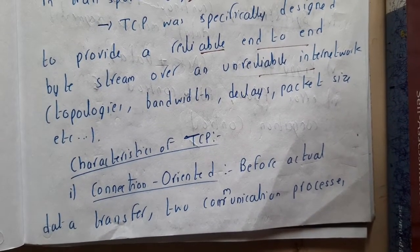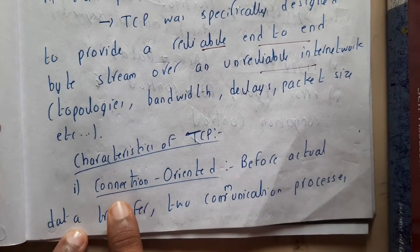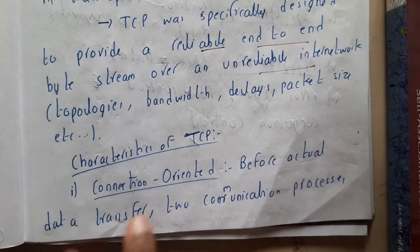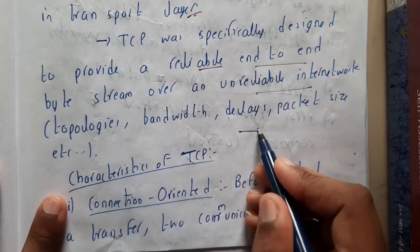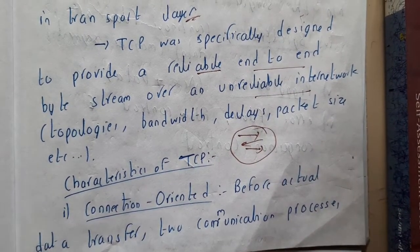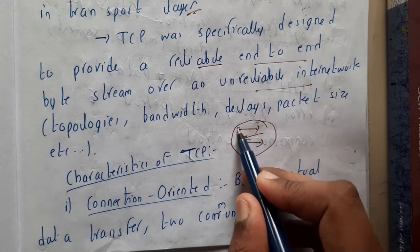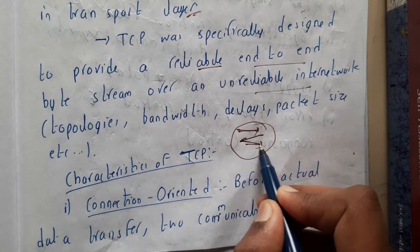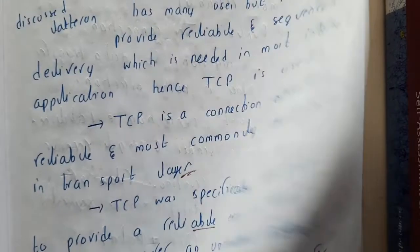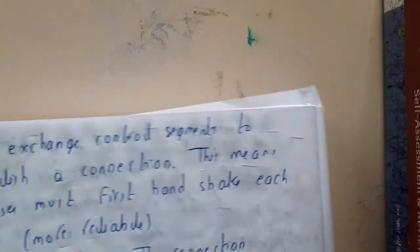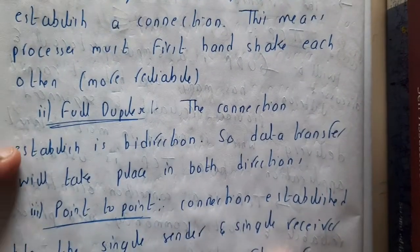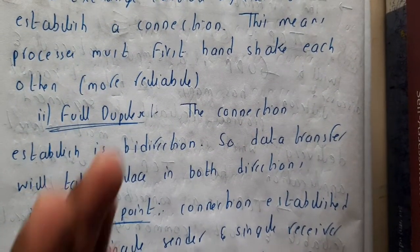Now let us go through the characteristics of TCP. Connection-oriented: before actual transfer of data, the connection is established. If you remember, we discussed three-phase handshaking — we first send the request, then get an acknowledgement, and then transfer the data. That is connection establishment.